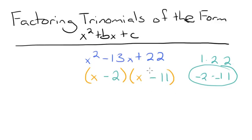We can FOIL this out again, and we'll get x squared minus 13x plus 22. So that means that our factored form, x minus 2 times x minus 11, is correct.